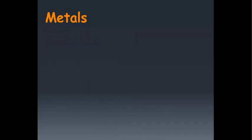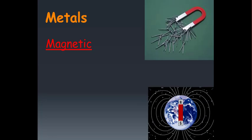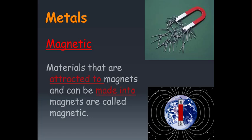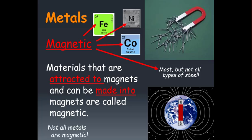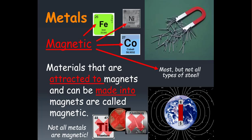The last physical property of metals that we're going to look at is that they are magnetic. Magnetic means that they are either attracted to magnets or they can be made into magnets. So most metals are capable of being magnetized, but not all. There are some metals that are not magnetic, but most are either magnetic or can be made into magnets.